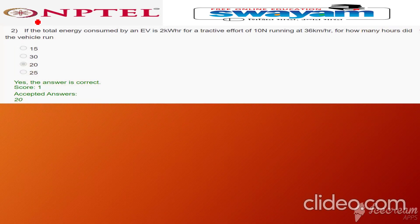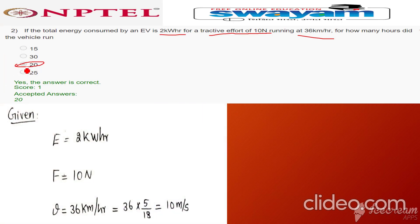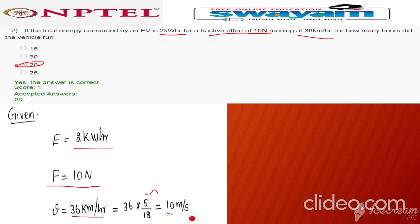Second question: if the total energy consumed by an EV is 2 kilowatt hour, for a tractive force of 10 newton, running at 36 kilometer per hour, for how many hours did the vehicle run? The correct answer is 20 hours. Given data: energy consumed E is 2 kilowatt hour, force F is equal to 10 newton, and velocity is 36 km/h. We need to convert that into meter per second by multiplying by 5 by 18, giving 10 meter per second.